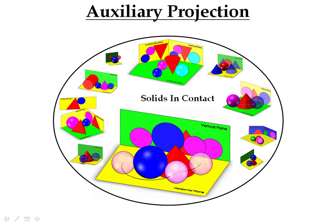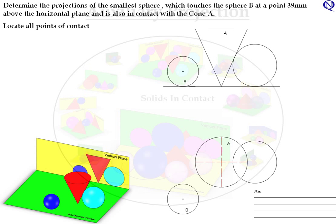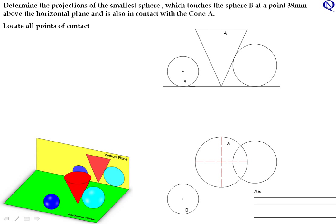We are going to look at this solids in contact question involving an auxiliary projection. The problem is to find the projection of the smallest sphere which touches sphere B at a point 39mm above the horizontal plane and is also in contact with cone A. Highlight the important parts of the question: smallest sphere, touches sphere B at 39mm above horizontal plane, and in contact with cone A.